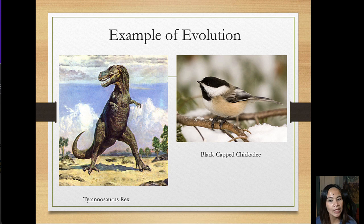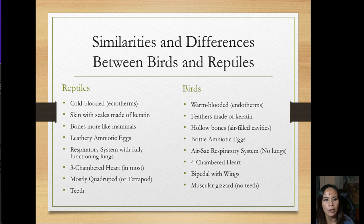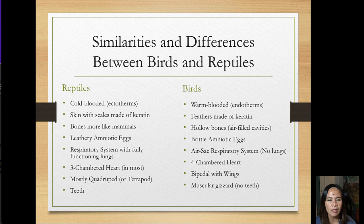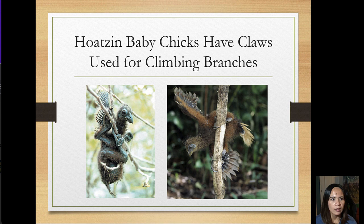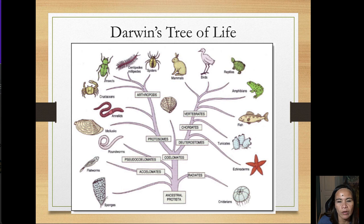What is an example of evolution? Take the T-rex and the black-capped chickadee and look at their similarities and differences: reptiles are cold-blooded, birds warm-blooded; reptiles have scales, birds have feathers. These differences and similarities tell us there is change occurring over time. Similarly, the archaeopteryx is believed to be an ancestor of current birds, and hoatzin baby chicks have claws used for climbing.